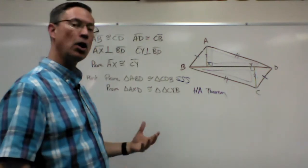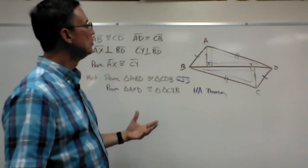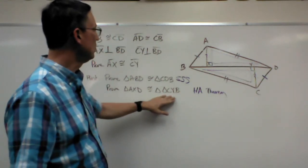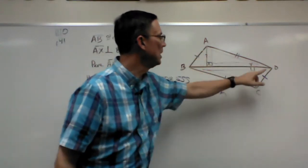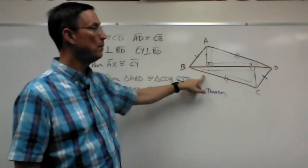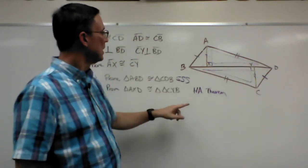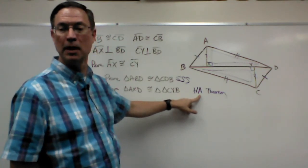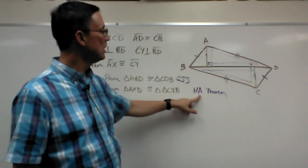Now that they are right triangles, do we have enough information to prove that they're congruent? Well, we do know that this side is congruent to this side, and that is the hypotenuse. That's good. We do know we're going to use the HA theorem. They tell us that in step seven. It says use the HA theorem.